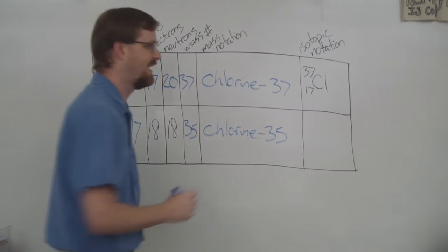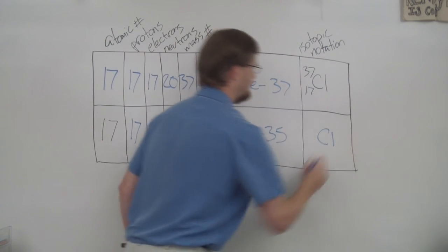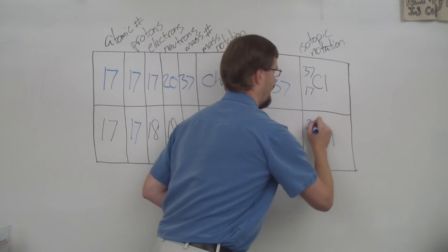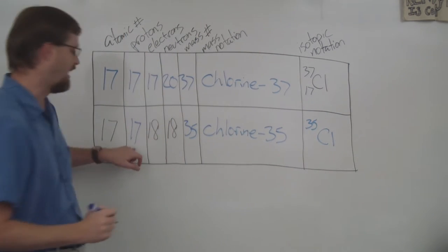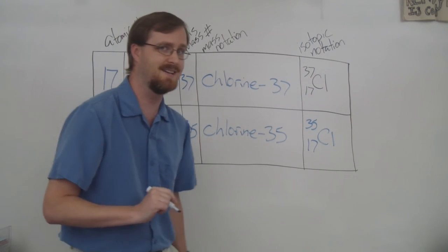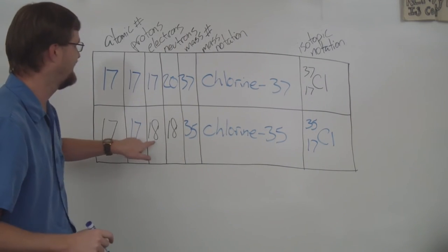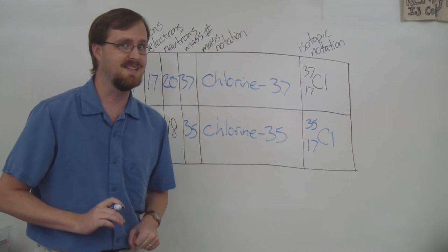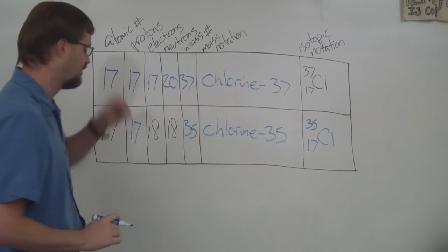And now for the isotopic notation, we take the symbol, which is Cl. We have the mass number, which is 35. We have the atomic number, which is 17. But hold on, we're not done. Did you notice that the protons and the electrons are not the same amount? Which means this is an ion.